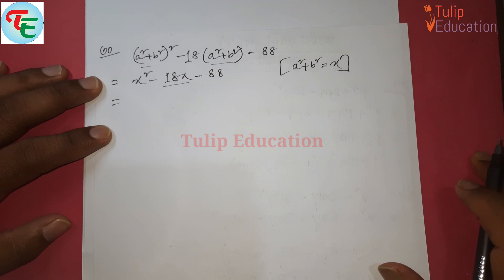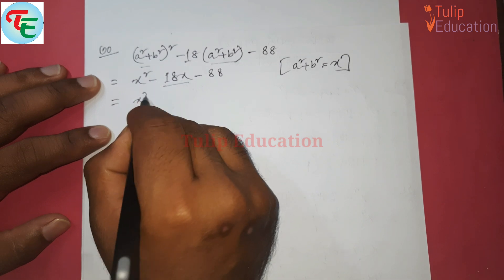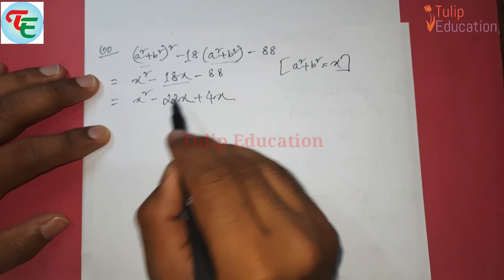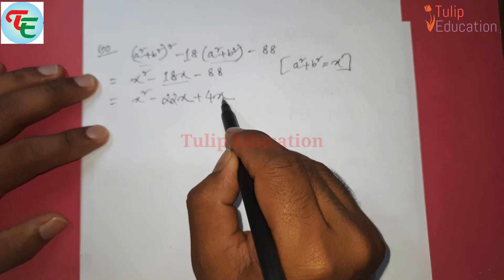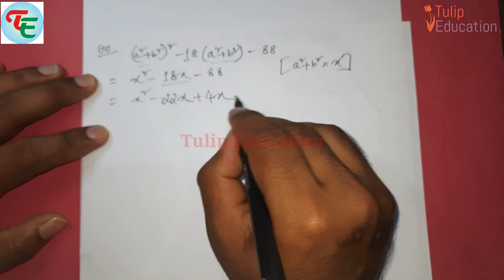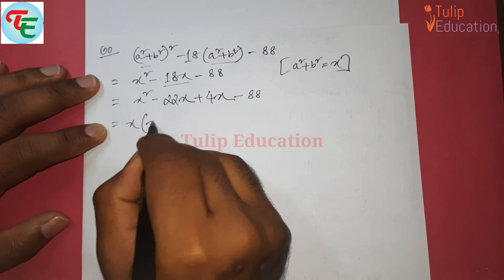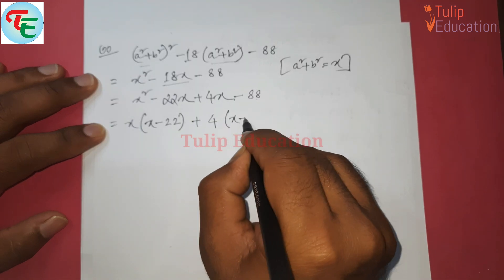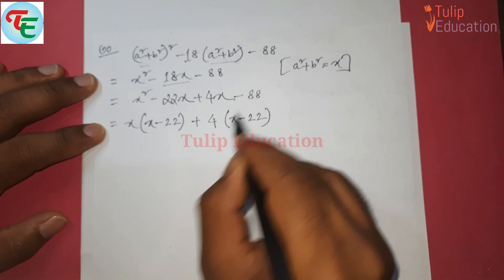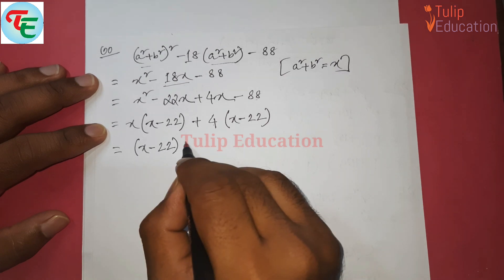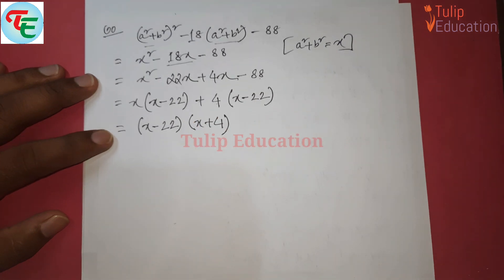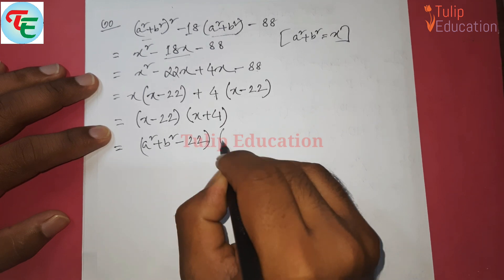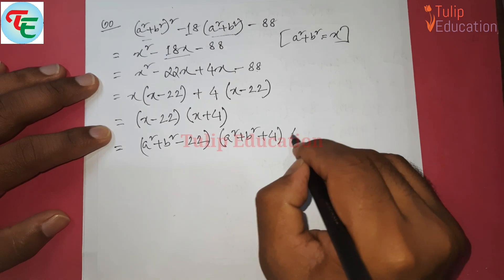Plus 4x times 22a, multiply to get 88. So minus 22x, if we add plus 4x, we get minus 18x. That's because minus times minus gives minus 88. Now from the first group, taking x common gives x minus 22. From the second group, taking 4 common gives x minus 22. So we get x minus 22 as common, times x plus 4. Substituting back, we get a squared plus b squared minus 22 and a squared plus b squared plus 4. That is my final answer.